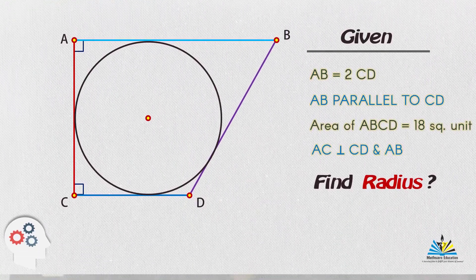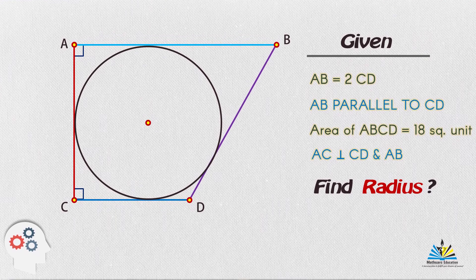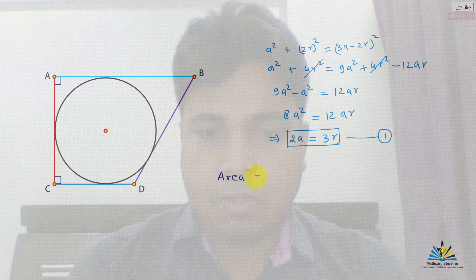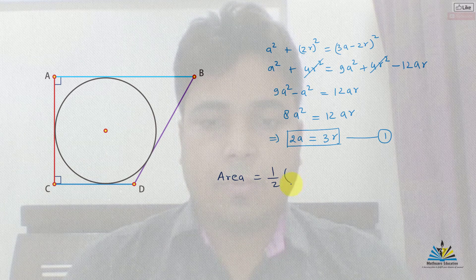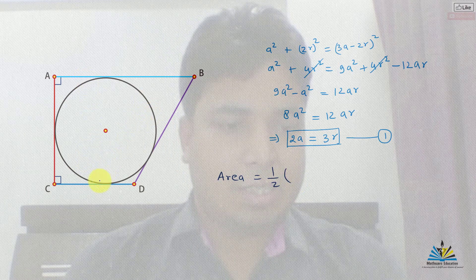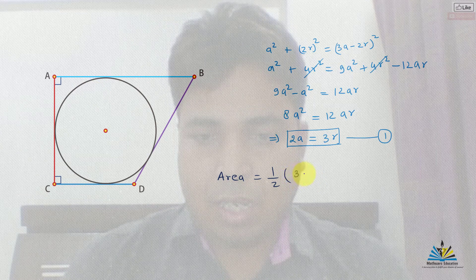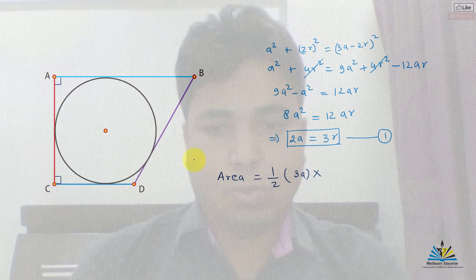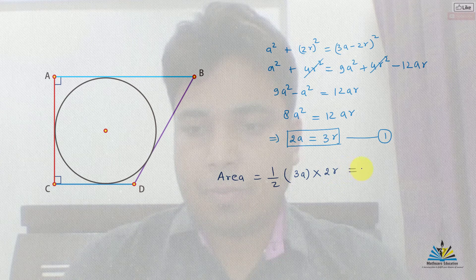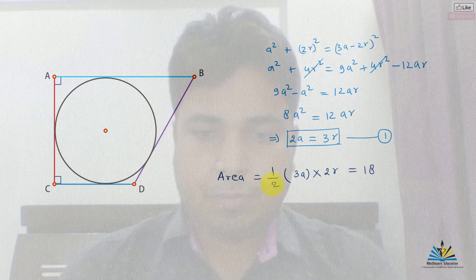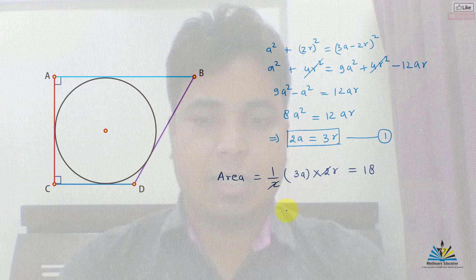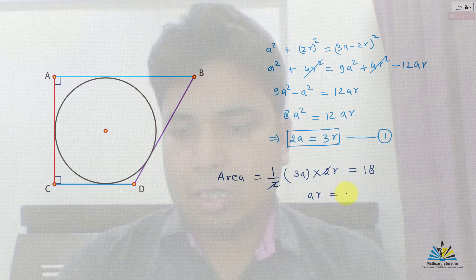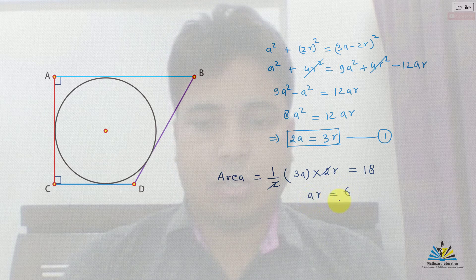We are also given that the area of the trapezium is 18 square units. The area must be equal to half times the sum of the parallel sides — that is a plus 2a, which is 3a — times the perpendicular distance between them, which is 2R. This equals 18. Simplifying, AR equals 6. This is the second result.